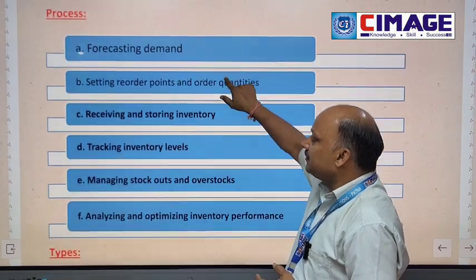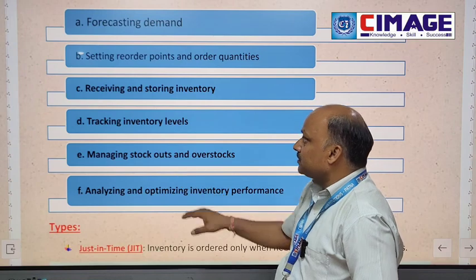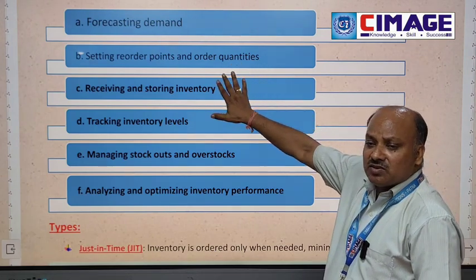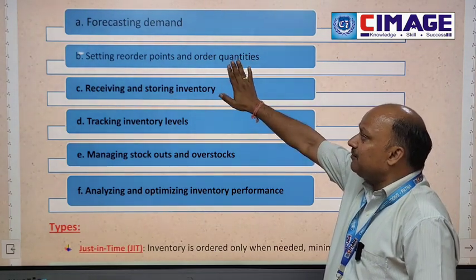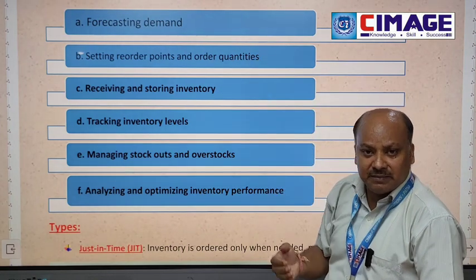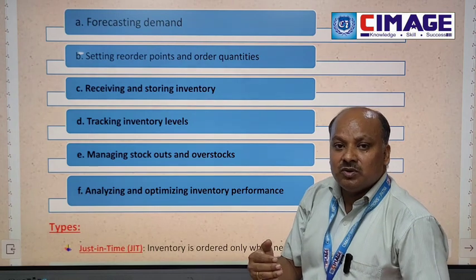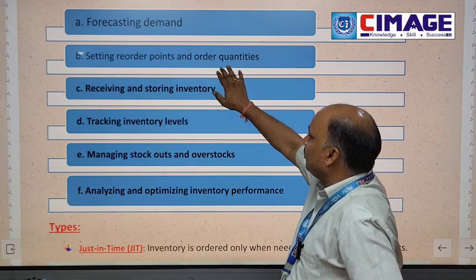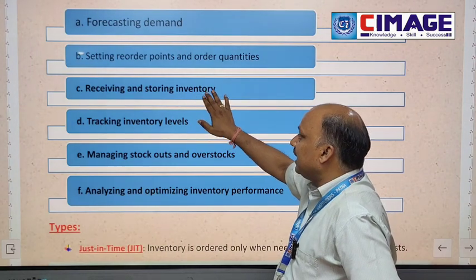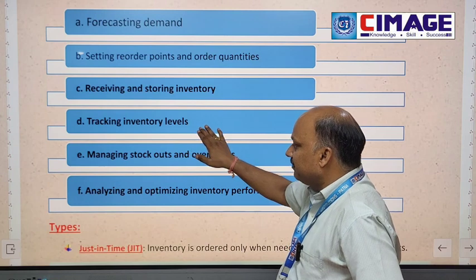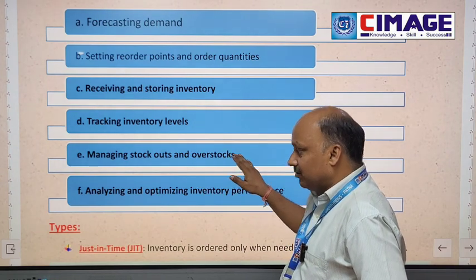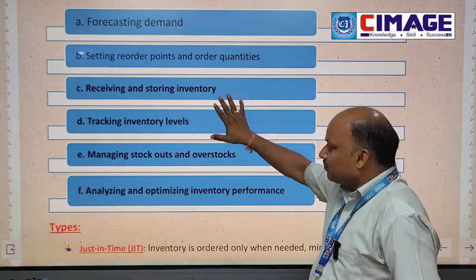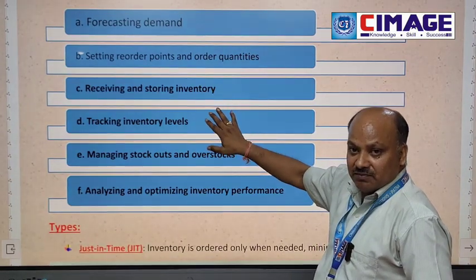Now, the process of inventory management includes the following steps: first, forecasting demand — previous data helps forecast demand; second, setting reorder points and order quantities; third, receiving and storing inventory; fourth, tracking inventory levels; fifth, managing stockouts and overstocks; and sixth, analyzing and optimizing inventory performance. These are the steps involved in the inventory management process.